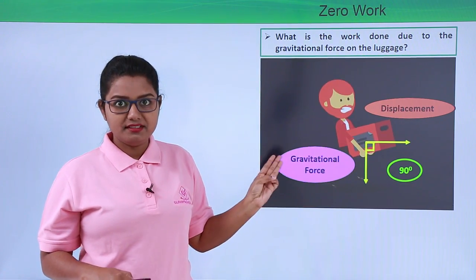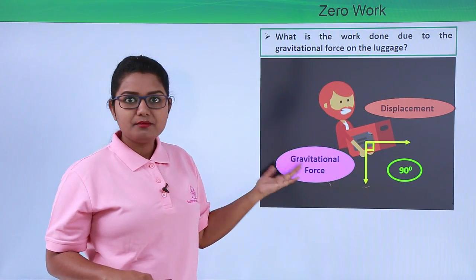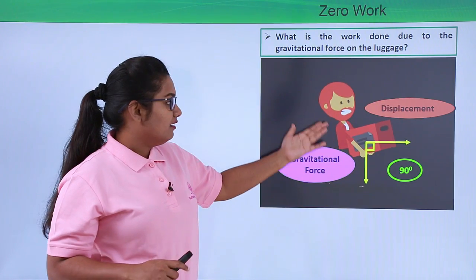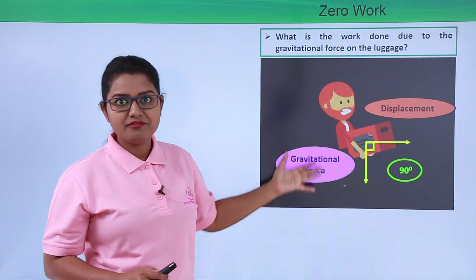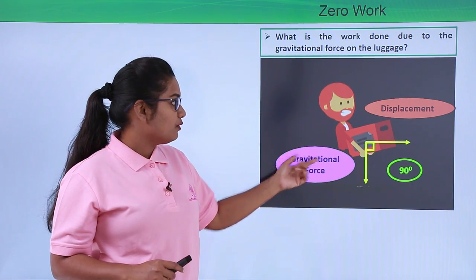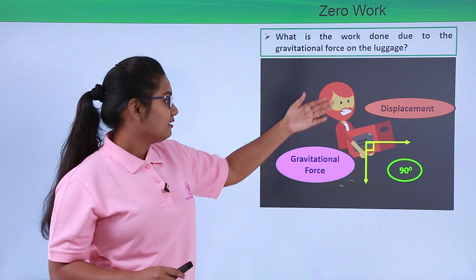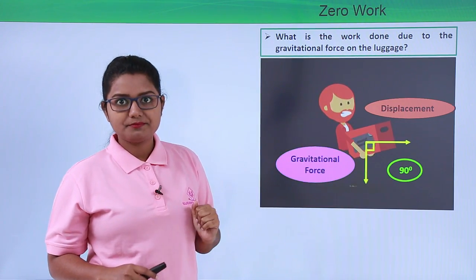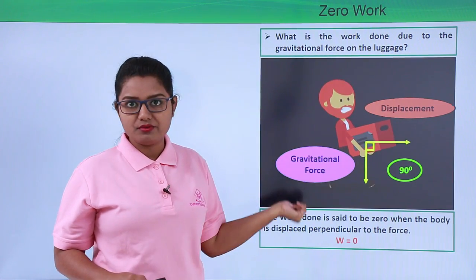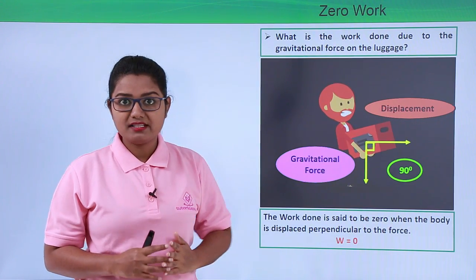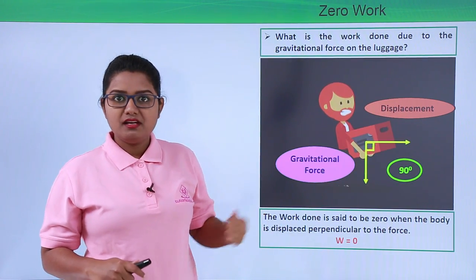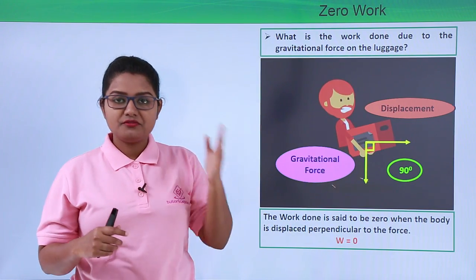By the third condition of work done, whenever the angle between force and displacement is 90 degrees, no work is done. Even though the man is carrying the luggage and moving forward with a lot of effort, the work done by the gravitational force is zero. Work done is also zero when there is no force acting on a body or there is no displacement.